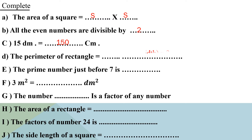Letter D: the perimeter of a rectangle equals length plus width, times 2. Letter E: the prime number just before 7 is what? Before 7 is 6, but 6 is not a prime number. Before 6 is 5. Yes, 5 is a prime number. So the answer is 5.